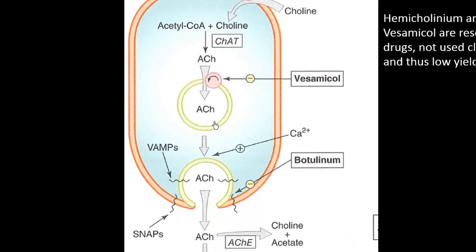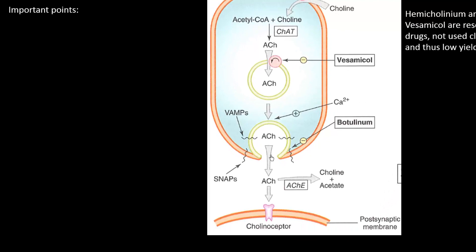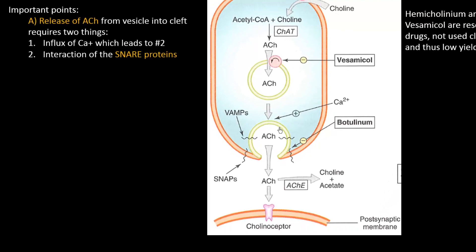In order for the contents of this vesicle to be released into the synaptic cleft, two things need to happen. First, an action potential comes down and opens this voltage-gated calcium channel, and we get the influx of calcium into the cell.